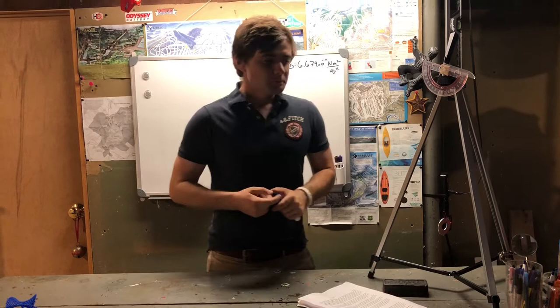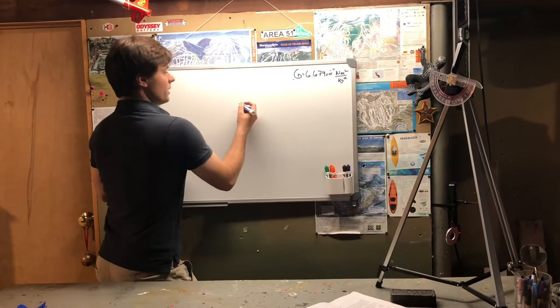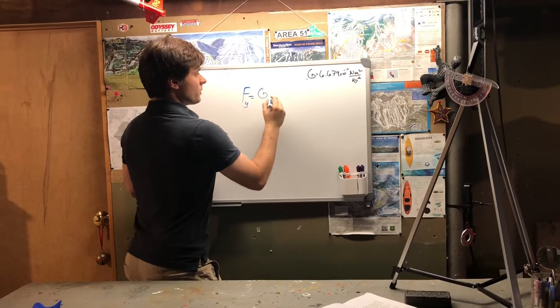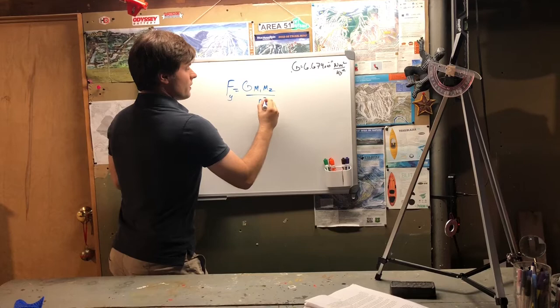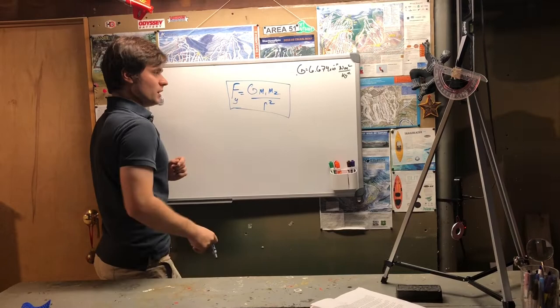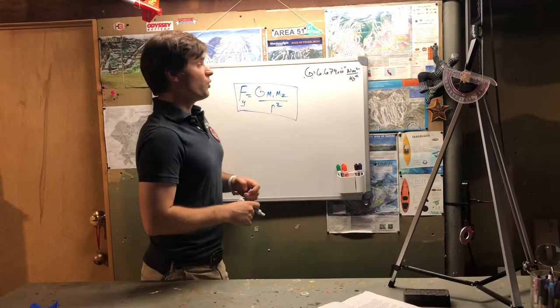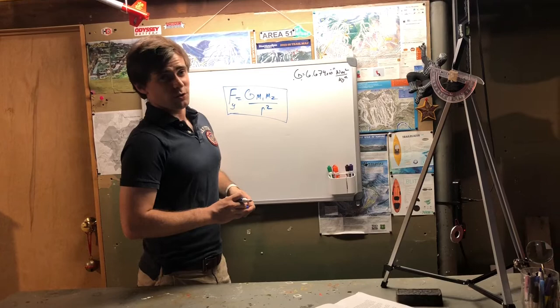He had an equation to calculate the force due to gravity. That's defined as F, or the force due to gravity, is equal to the gravitational constant times the mass of the first object, the mass of the second object, over the distance between the two objects squared. And with this equation, you can calculate the force between any two objects. G is just a gravitational constant equal to 6.674 times 10 to the negative 11th newton meters squared over kilograms squared.